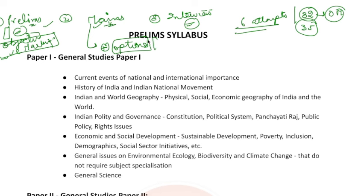You have a list of subjects to choose from for your optional. And then is your last stage — the interview. If you qualify all three stages, you become a KAS officer or an IAS officer.